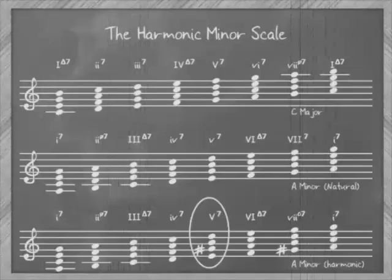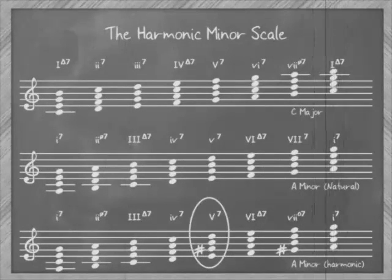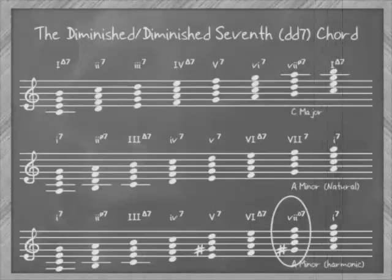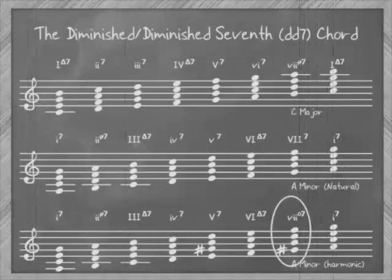In the harmonic minor scale, the raised 7th degree changes the 5 chord from a minor-minor 7th to a major-minor 7th, and the 7th chord from a major-minor 7th to a diminished-diminished 7th or fully diminished 7th chord. Like the diminished triad, it's identified by the circle symbol, no slash.